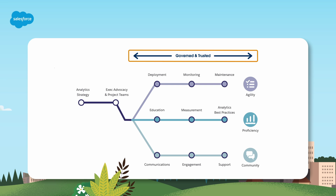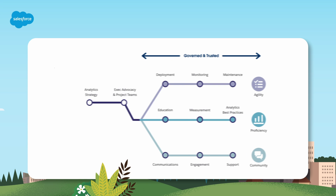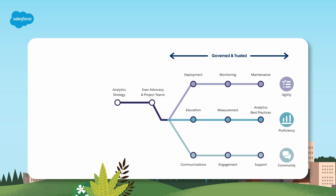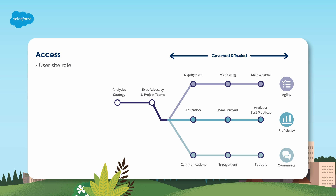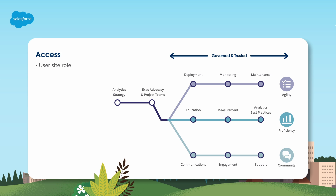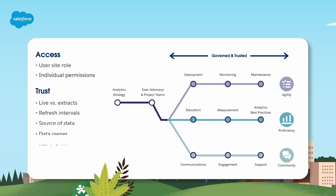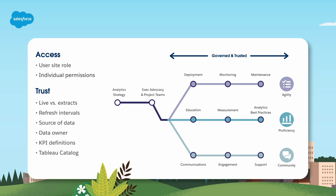Creating a governed and trusted environment is essential. Establish clear governance policies and compliance measures to maintain data integrity and security. Manage access with a combination of a user's site role — whether they are an administrator, creator, explorer, or viewer — and their individual permissions. Permissions will determine what a user can and can't access, as well as the level of interactivity they have with that piece of content.